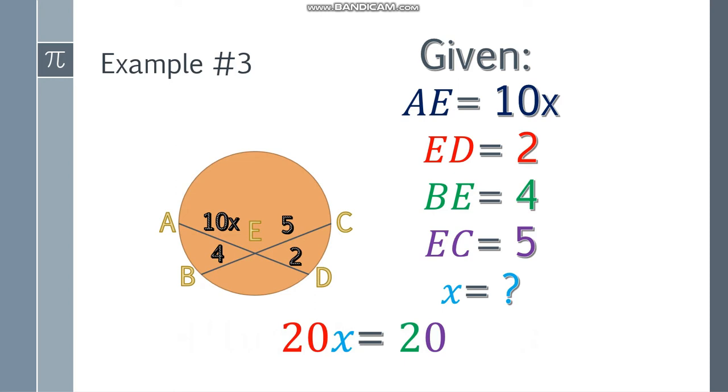Now to find the value of X, you have to divide both sides by 20. And X will be 1. And if you are asked to find what is the value of AE, just substitute the value of X here. And we can find that 10 times 1 is equal to 10. So that will be 10 units.